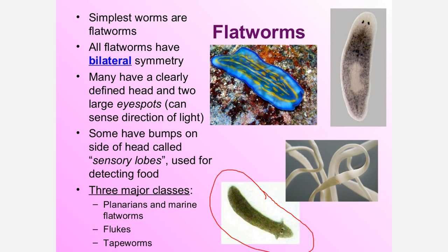Flatworms show bilateral symmetry — split in half and you get mirror images. They have defined eye spots which are really just photosensors that detect the direction of light, and sensory lobes called auricles on the sides that are chemosensors, allowing them to find prey. Flatworms fall into three major classes: planaria and marine flatworms, flukes, and tapeworms.